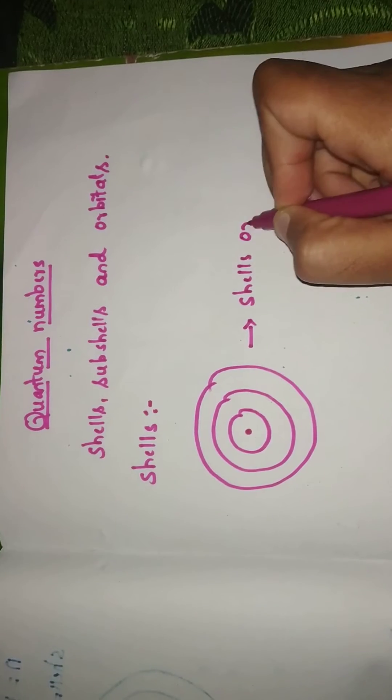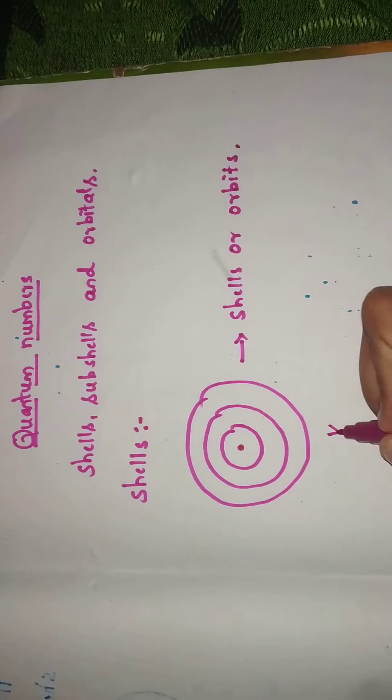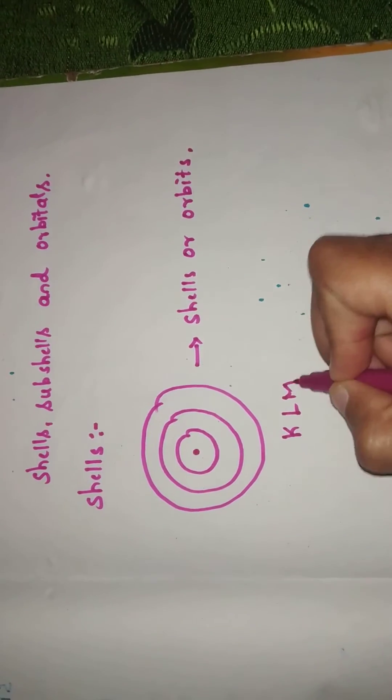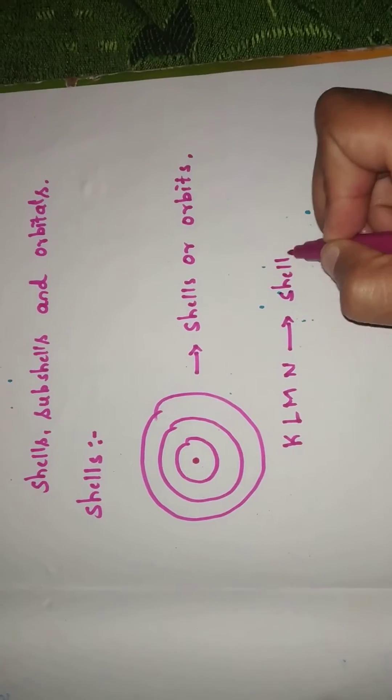These are also called as orbits. These are K, L, M, N. These are the shells.